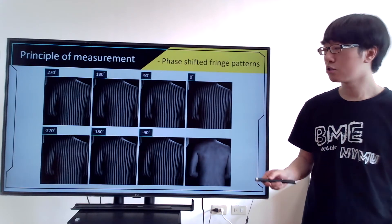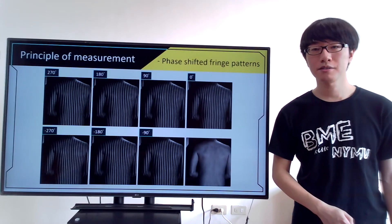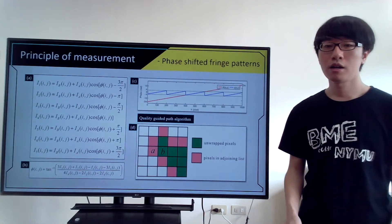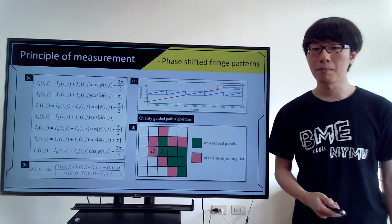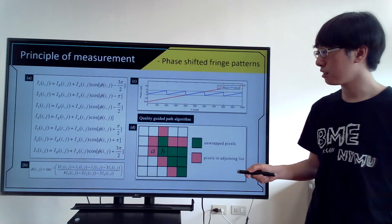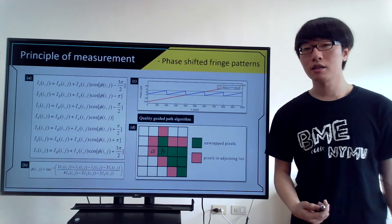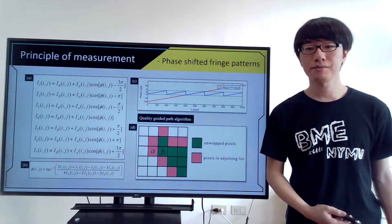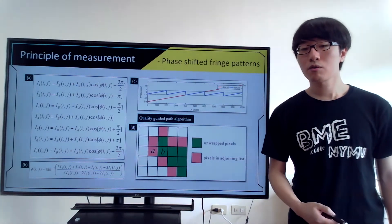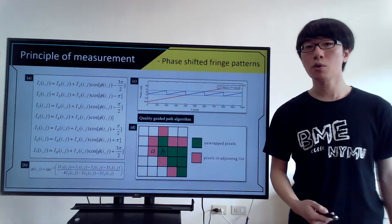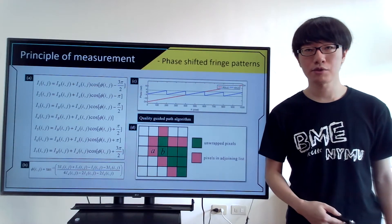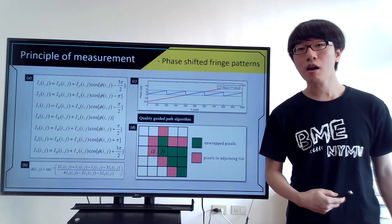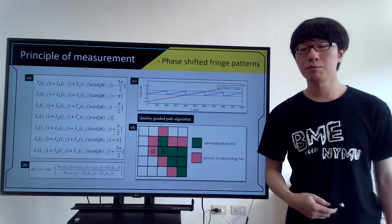We designed the pattern to move sequentially from right to left during our experiment. The equations of the fringe patterns are shown in figure A. With alpha pi of phase-shifting value, we can combine and transform the intensity equation to a phase equation. To reconstruct a 3D surface, the phase data needs to be unwrapped by adding or reducing several periods along each section. Our quality-guided path algorithm decides which pixel to unwrap first by evaluating their secondary phase differences, and puts less-continuous pixels in the adjoining list, ensuring the unwrapped phase is smooth and continuous.